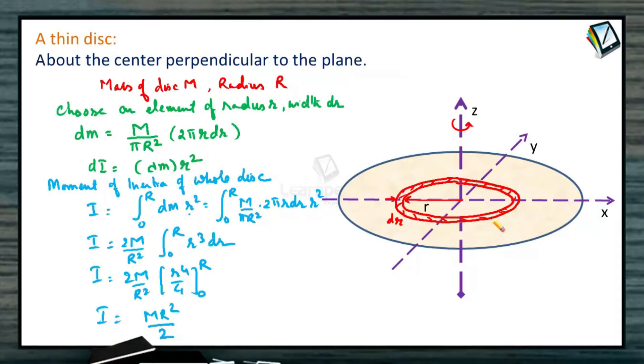Substitute the value of small r as capital R, I is equal to mR square by 2. This is the moment of inertia of the whole disk about Z axis passing through the center of mass, about the axis passing through the center perpendicular to plane.